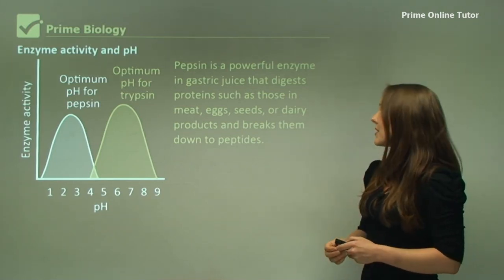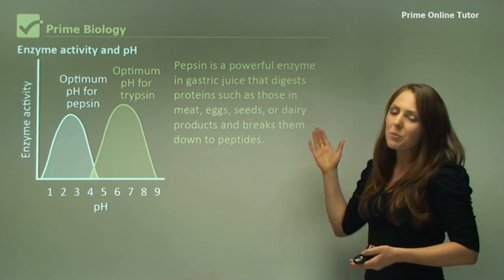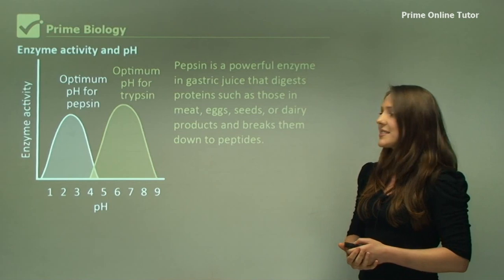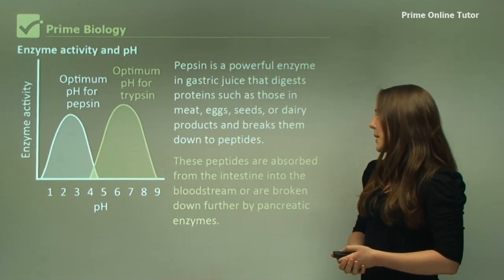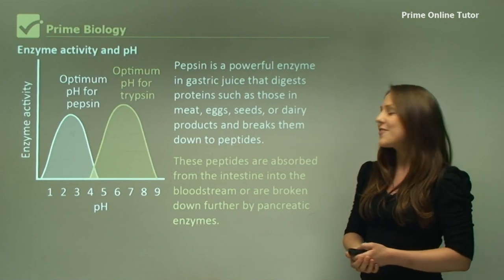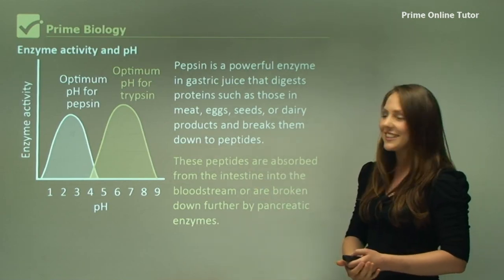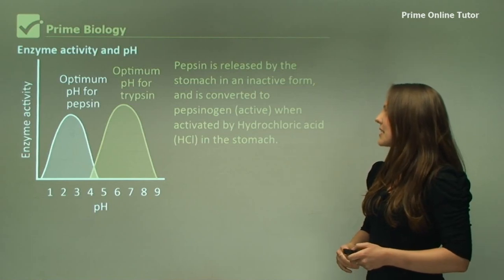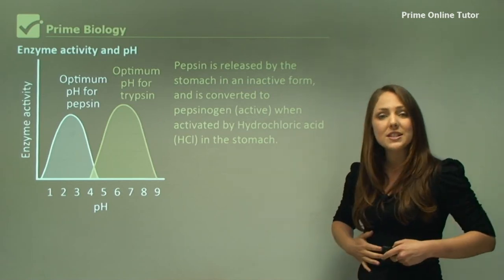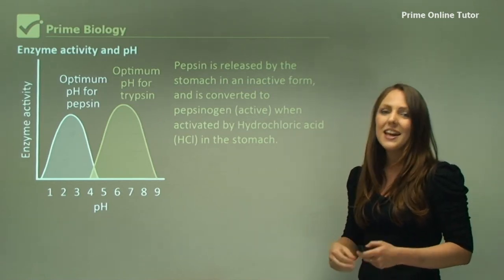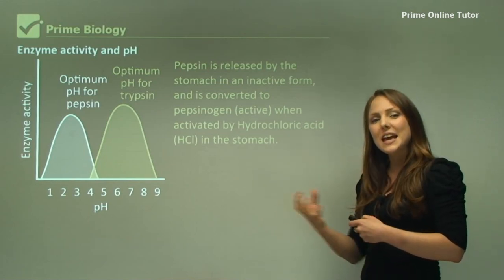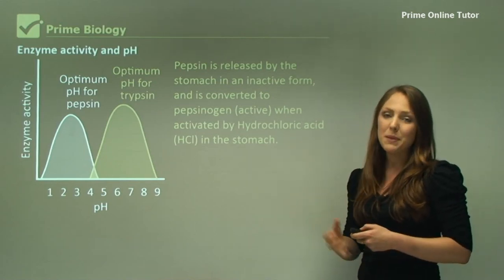The proteins that it digests are meat, eggs, seeds, or dairy products, and it breaks them down into peptides. These peptides are absorbed from the intestine to the bloodstream or are broken down further by pancreatic enzymes such as trypsin. Pepsin is released in the stomach in its inactive form. With hydrochloric acid which is released by the stomach, it's turned into pepsinogen. Pepsinogen is the active form and it's able to break down the proteins into the peptides.